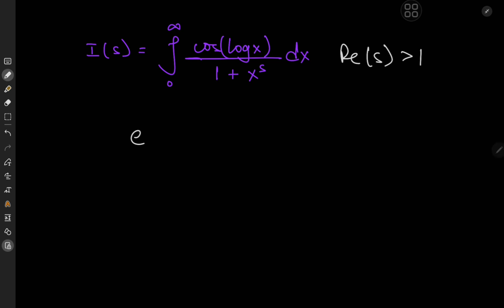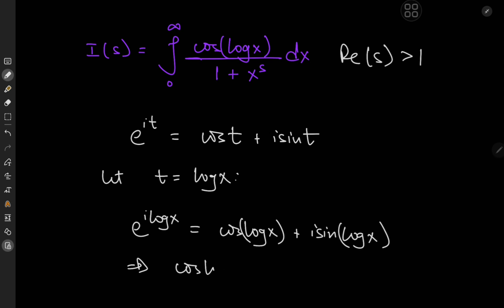And by that I mean just Euler's beautiful formula. We have e to the i t, this can be expanded as cosine t plus i times sine t. So if we let t here equal to the logarithm of x, then we have e to the i log x equal to cosine log x plus i times the sine of log x.